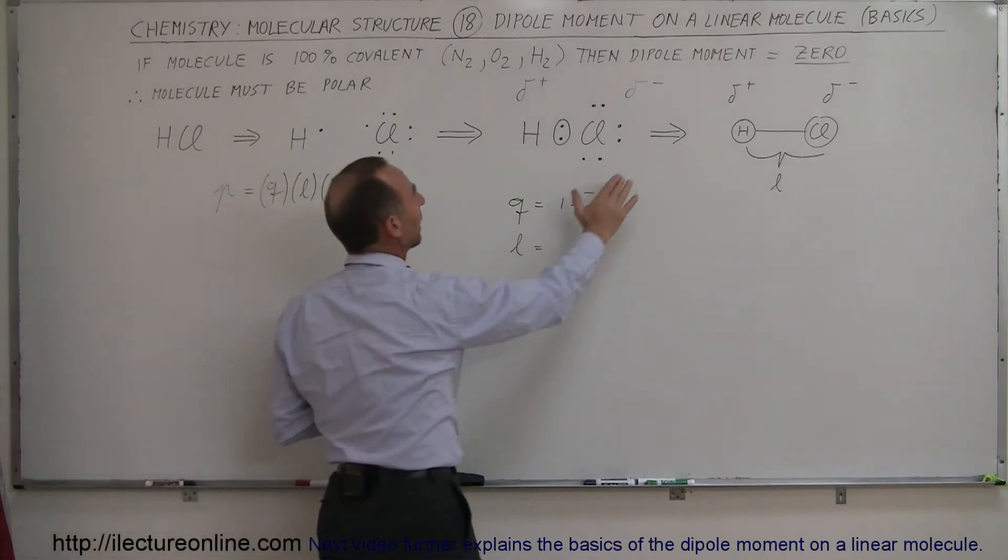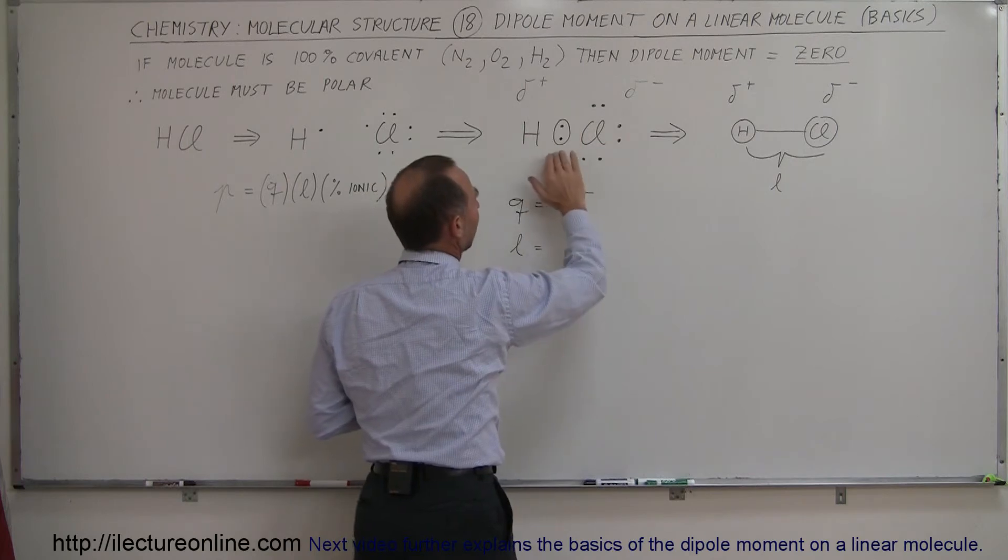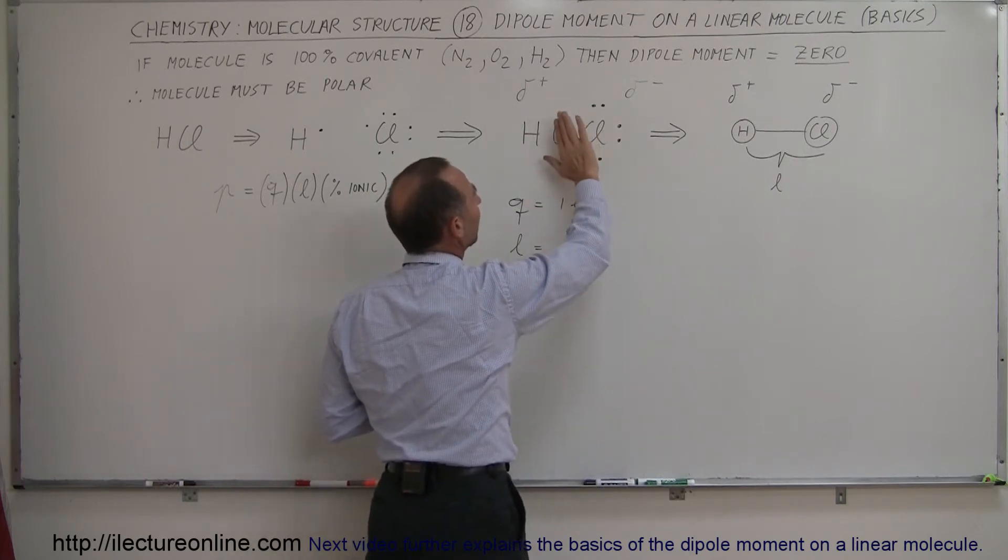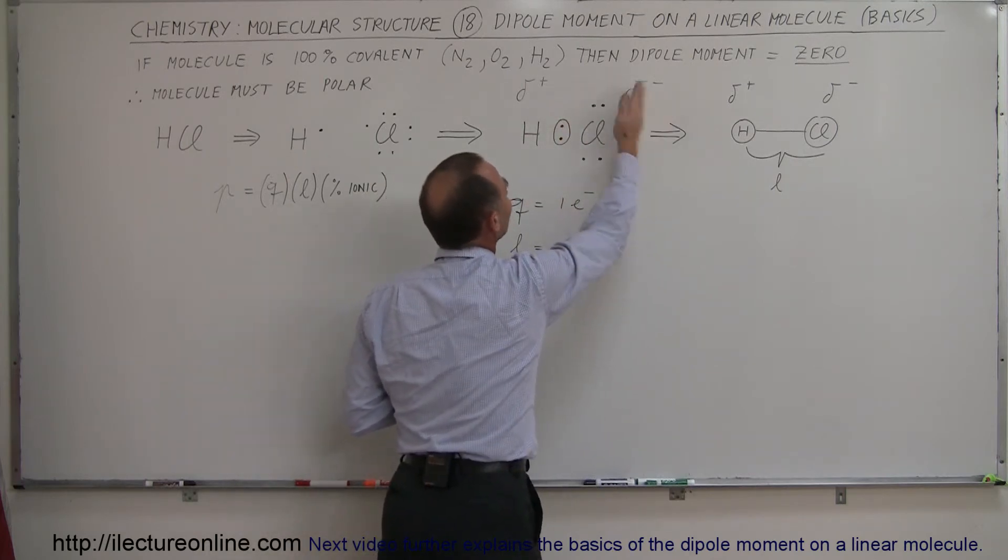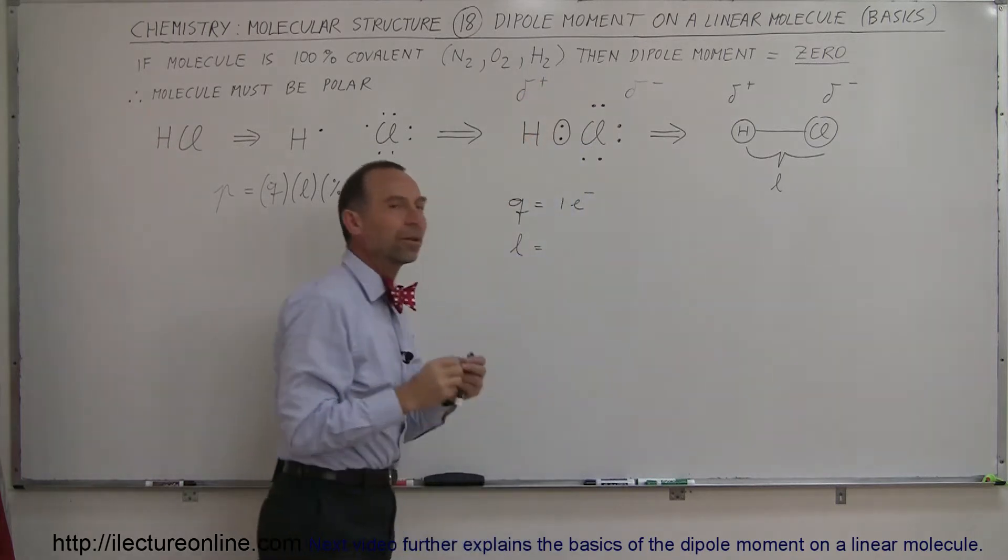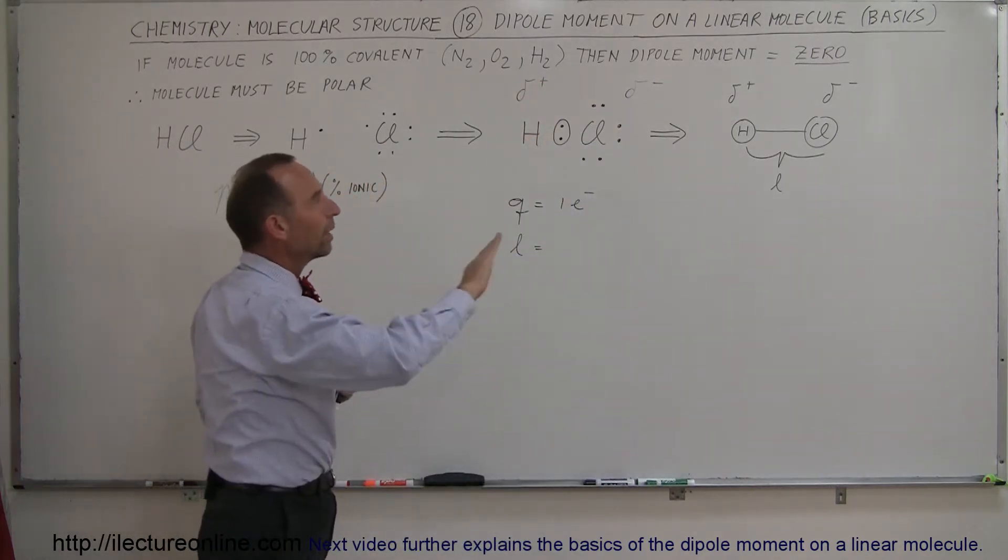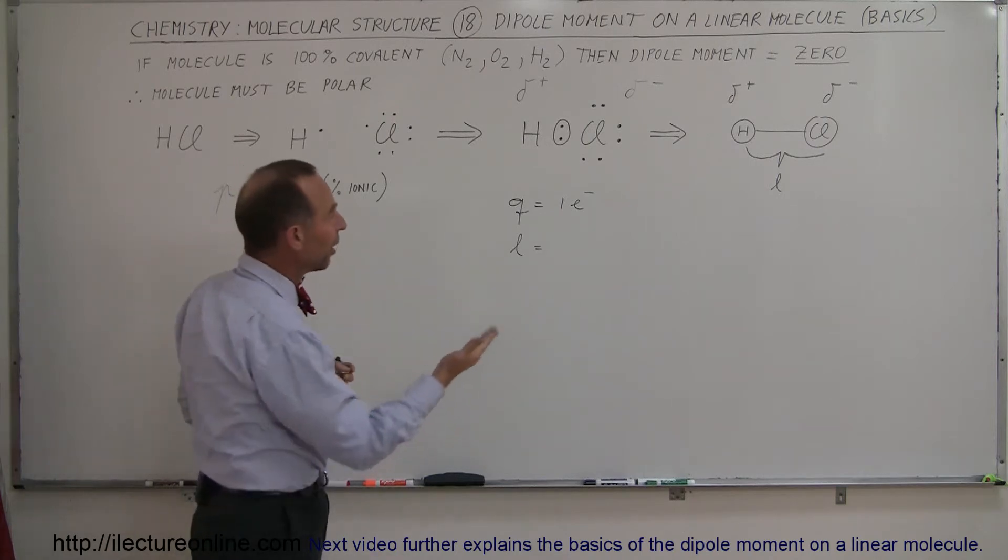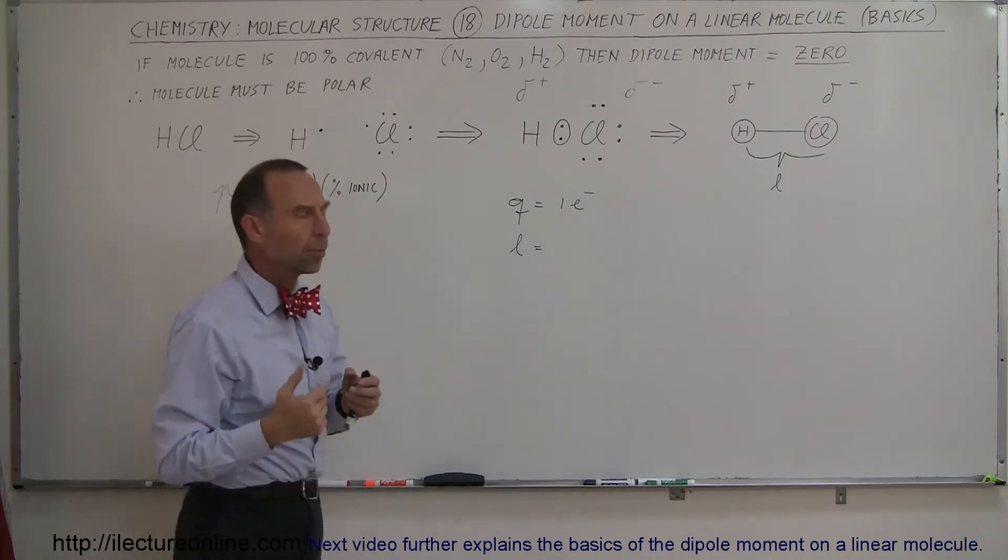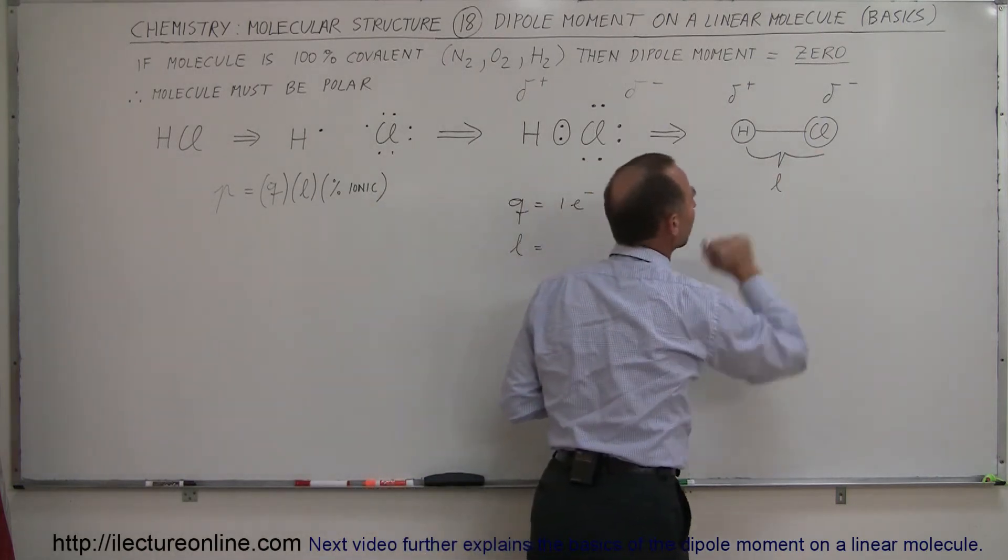What that means is that a linear molecule like HCl, hydrochloric acid, will be more electronegative on one side and more electropositive on the other side. There will be somewhat of a disparity in the charge distribution, making one end of the molecule a little bit more positive, the other end a little bit more negative. So we end up with what we call a polar molecule.